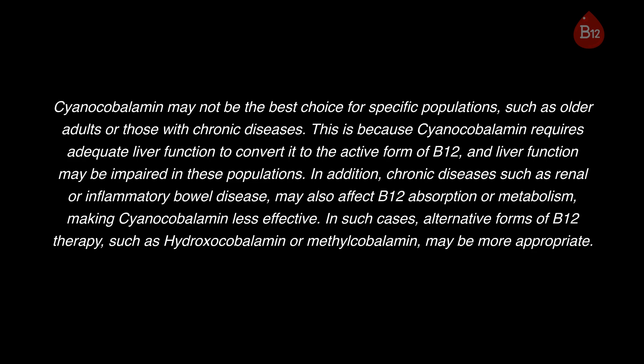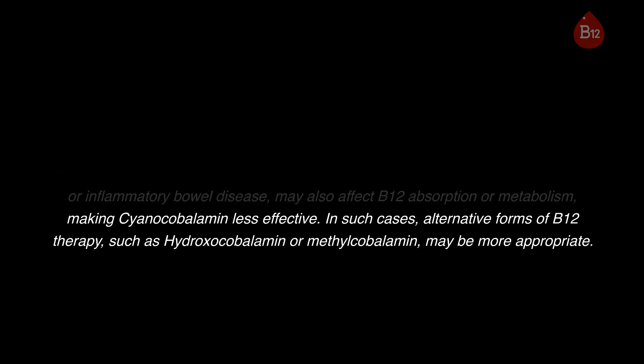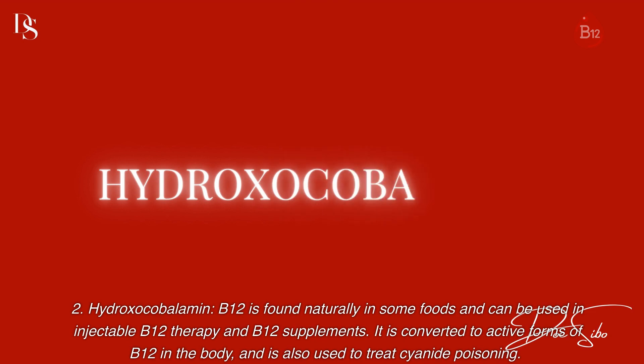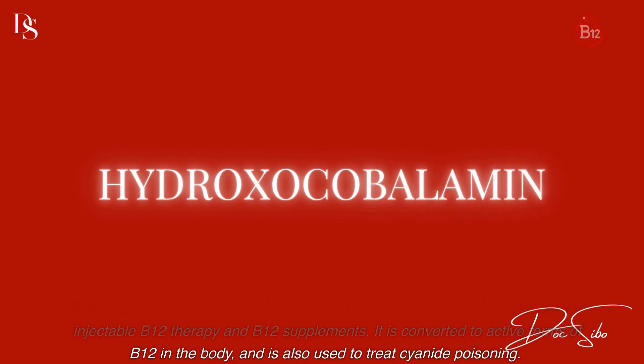In addition, chronic diseases such as renal or inflammatory bowel disease may also affect B12 absorption or metabolism, making cyanocobalamin less effective. In such cases, alternative forms of B12 therapy, such as hydroxocobalamin or methylcobalamin, may be more appropriate. Hydroxocobalamin is found naturally in some foods and can be used in injectable B12 therapy and B12 supplements. It is converted to active forms of B12 in the body and is also used to treat cyanide poisoning.